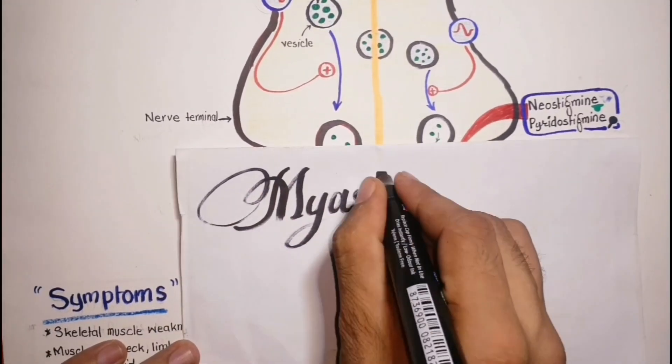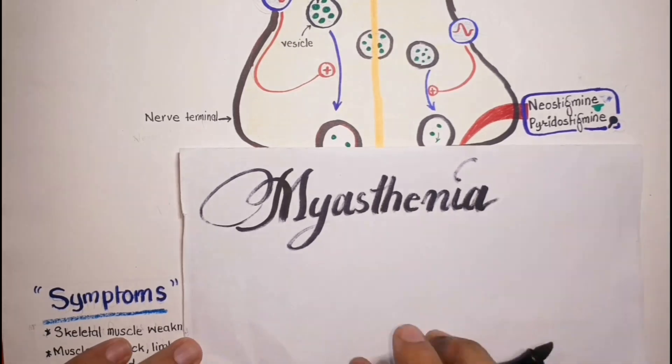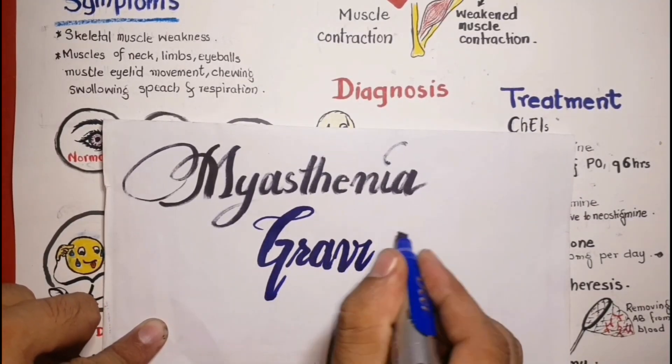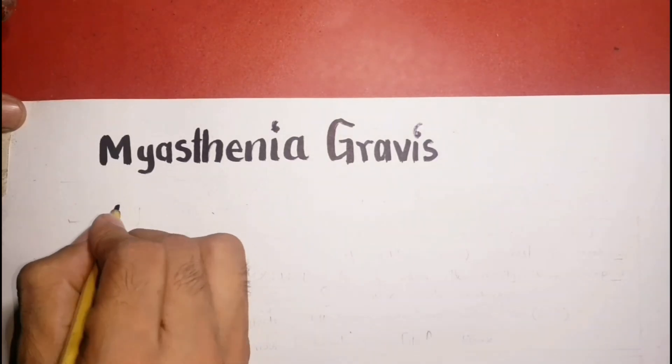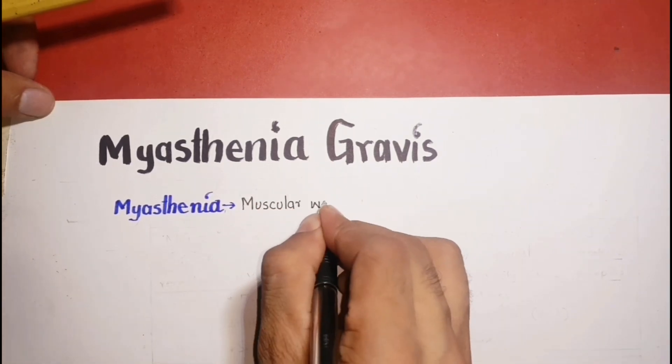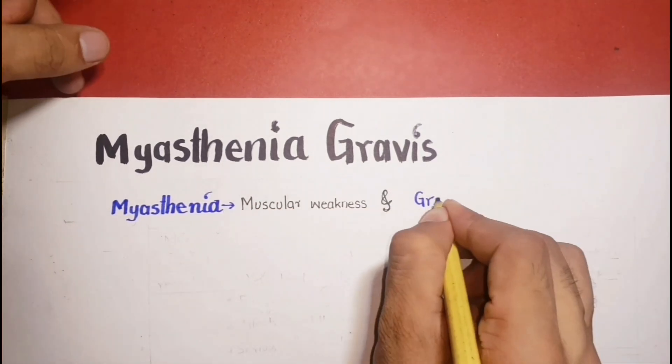In this video, we will generally discuss about myasthenia gravis. The term myasthenia means muscular weakness and gravis means serious.